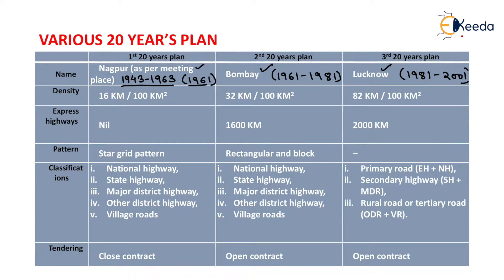The next 20-year road plan, the Bombay road plan, started from 1961 and was completed in 1981. The third 20-year road plan, the Lucknow road plan, started from 1981 and was completed in 2001.